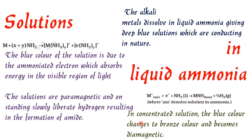In concentrated solution, the blue color changes to bronze color and becomes diamagnetic. When the concentration of alkali metals in liquid ammonia increases, they go for arrangement into paired electrons. When they go for pairing, they show diamagnetic property and the color changes from blue to bronze — all because of the pairing and unpairing of electrons.